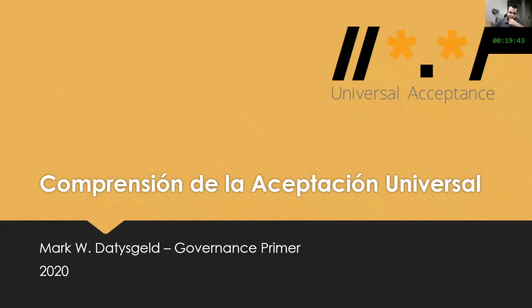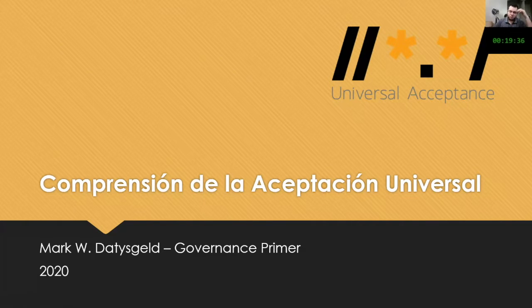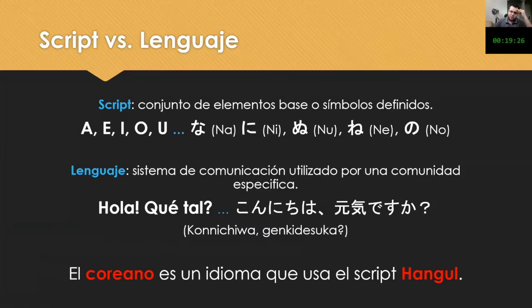I'm going to speak a bit about universal acceptance. This is a concept that is closely connected with ICANN, but involves all the various components of Internet governance.